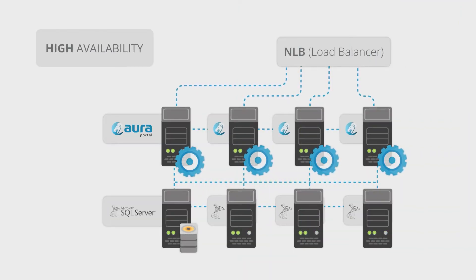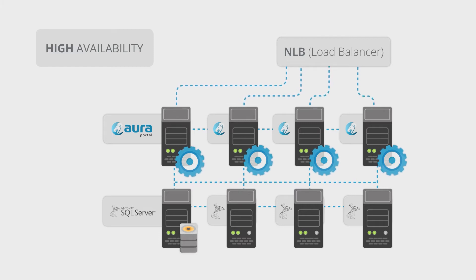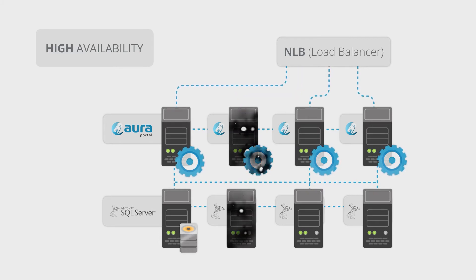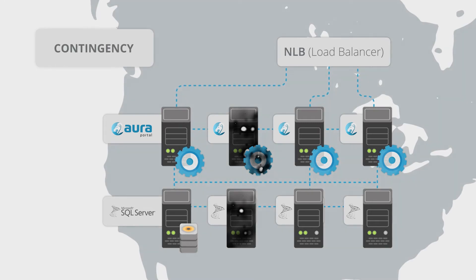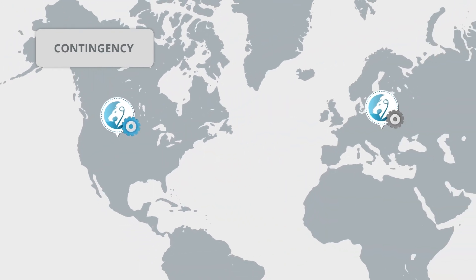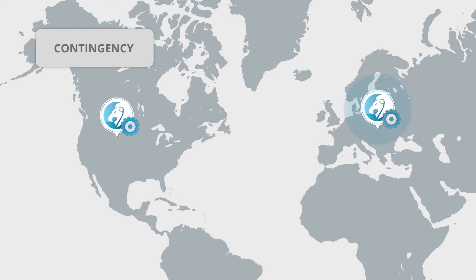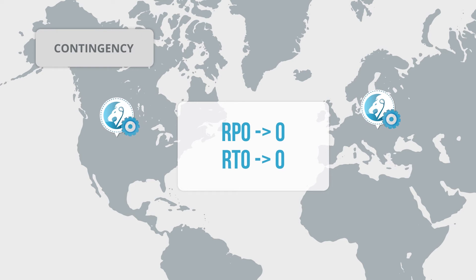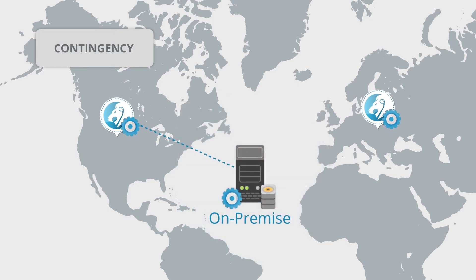High availability and failover: a configuration with a load balancer for the application servers and several database servers as a cluster, as mentioned in the horizontal scalability section, provides high availability. Thus, if any of the servers go down, the others stay in operation. Additionally, Oroportal cloud has a contingency plan with different geographical locations, which allows users to continue working even if one of the data centers is the victim of a natural disaster or something similar. It is also possible to have replicas of the complete system in more remote areas, so the recovery point objective (RPO) and the recovery time objective (RTO) tend to zero. It is worth mentioning that Oroportal has the option to synchronize an on-premise server so that the customer can leave the cloud plan at any time and continue working without losing any data.